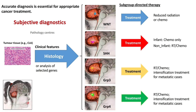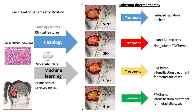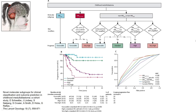Accurate diagnosis is essential for appropriate cancer treatment. That's why the first level of patient stratification in medulloblastoma incorporates histopathological analysis of tumor tissue alongside analyzing molecular data. The international consensus definition of medulloblastoma, published in 2012, recognizes four primary molecular subgroups. As you can see from this slide, these subgroups — called WNT, Sonic Hedgehog (SHH), Group 3, and Group 4 — have distinct clinical, pathological, and molecular features, providing initial subgroup-directed therapy in clinical trials.